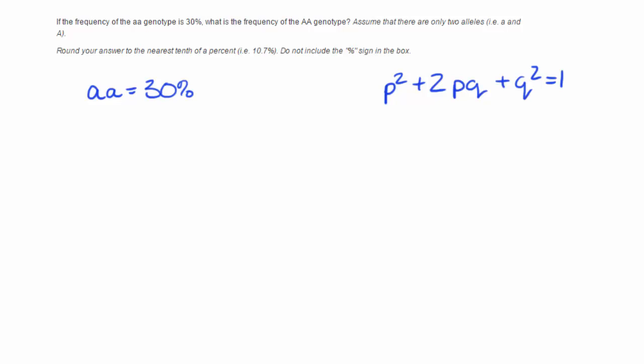For this question, we're given the frequency of the aa genotype. If we look at the Hardy-Weinberg equation, this is equivalent to Q squared. So our first step for solving this is to come up with Q. If we know that Q squared is equal to 30%, then all we have to do is take the square root of that, and then we would get Q.